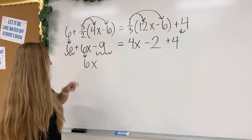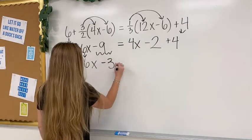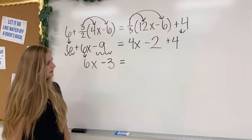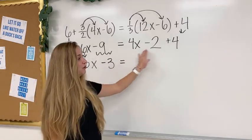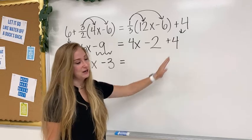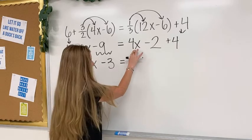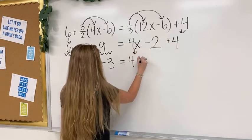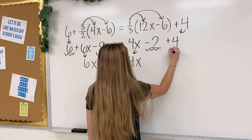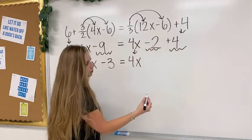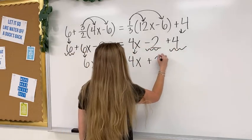I combined these in my head already, and I can write minus 3 or negative 3, bring down the equal sign, and then I also have to combine like terms over here. The 4x has no like terms, so I just bring it down, but then I have negative 2 and positive 4, which would combine to give me positive 2.